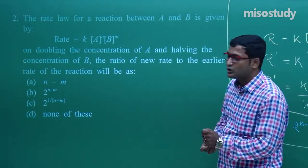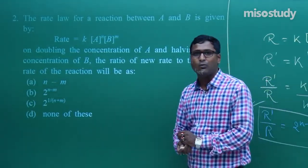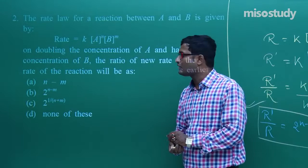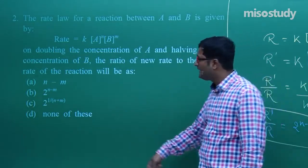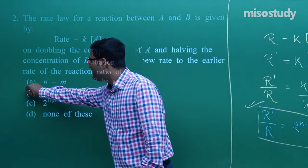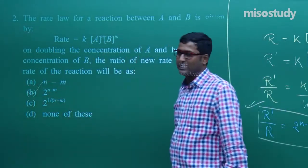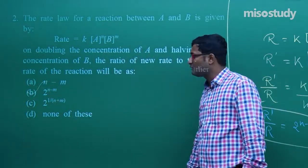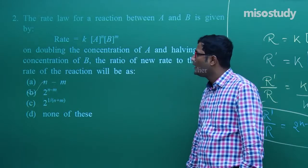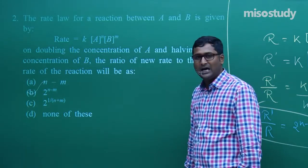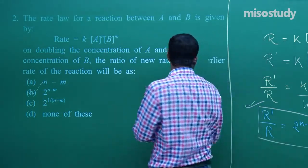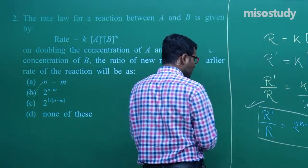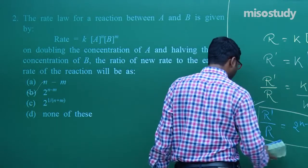For question number 2, B is the correct option — the ratio of the new rate to the earlier rate is 2^(N−M).